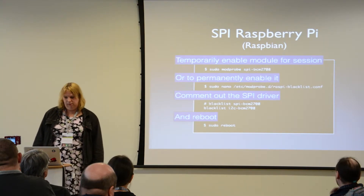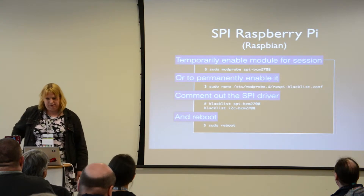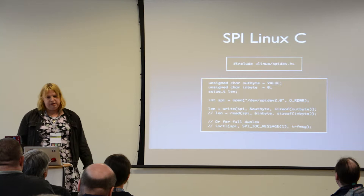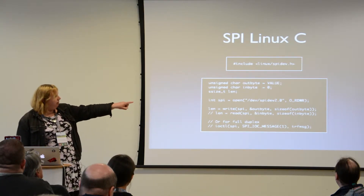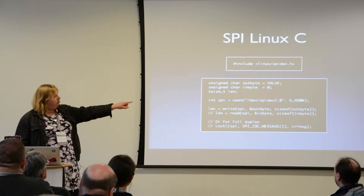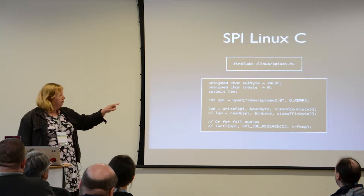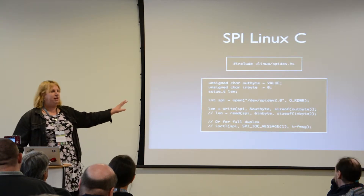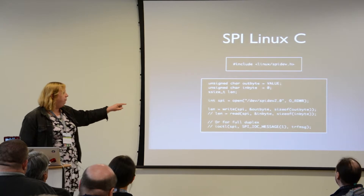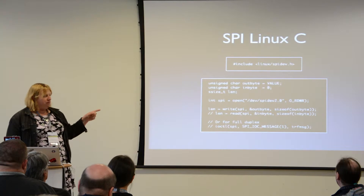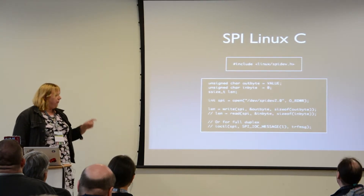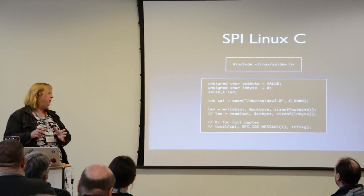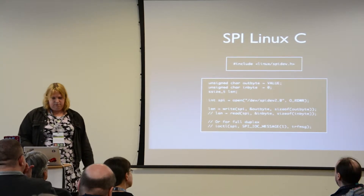Once you've done that, you'll have to reboot. Once enabled, there will be an SPI device available. In C, you just open the device — the 2 means SPI device 2, the 0 means chip select 0. This code is actually off a BeagleBone, not a Raspberry Pi, but it's exactly the same. You can simply write bytes out and read them in using standard C read and write, or do full duplex using an IOC tool and a data structure. There's documentation in the kernel docs directory.